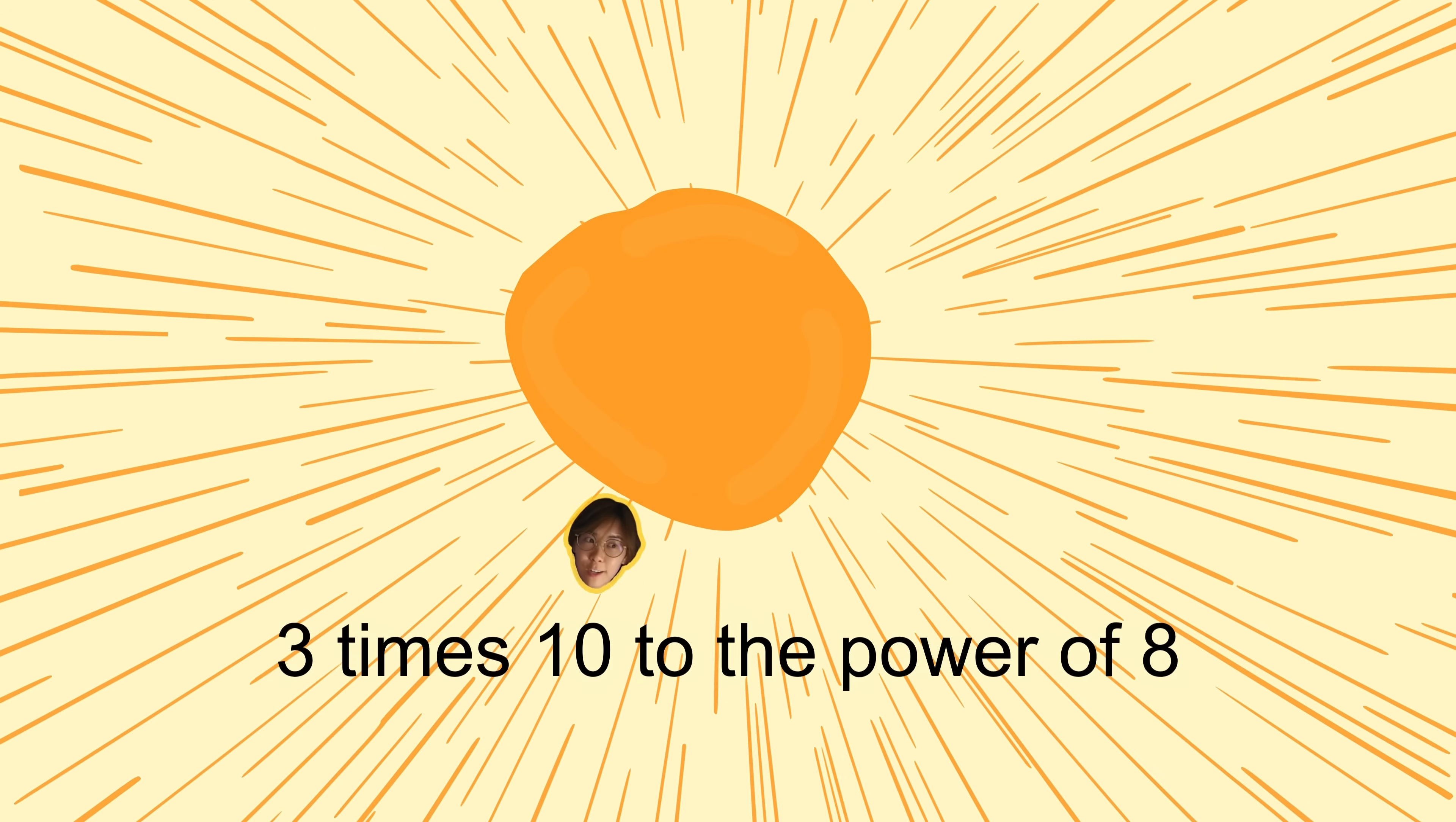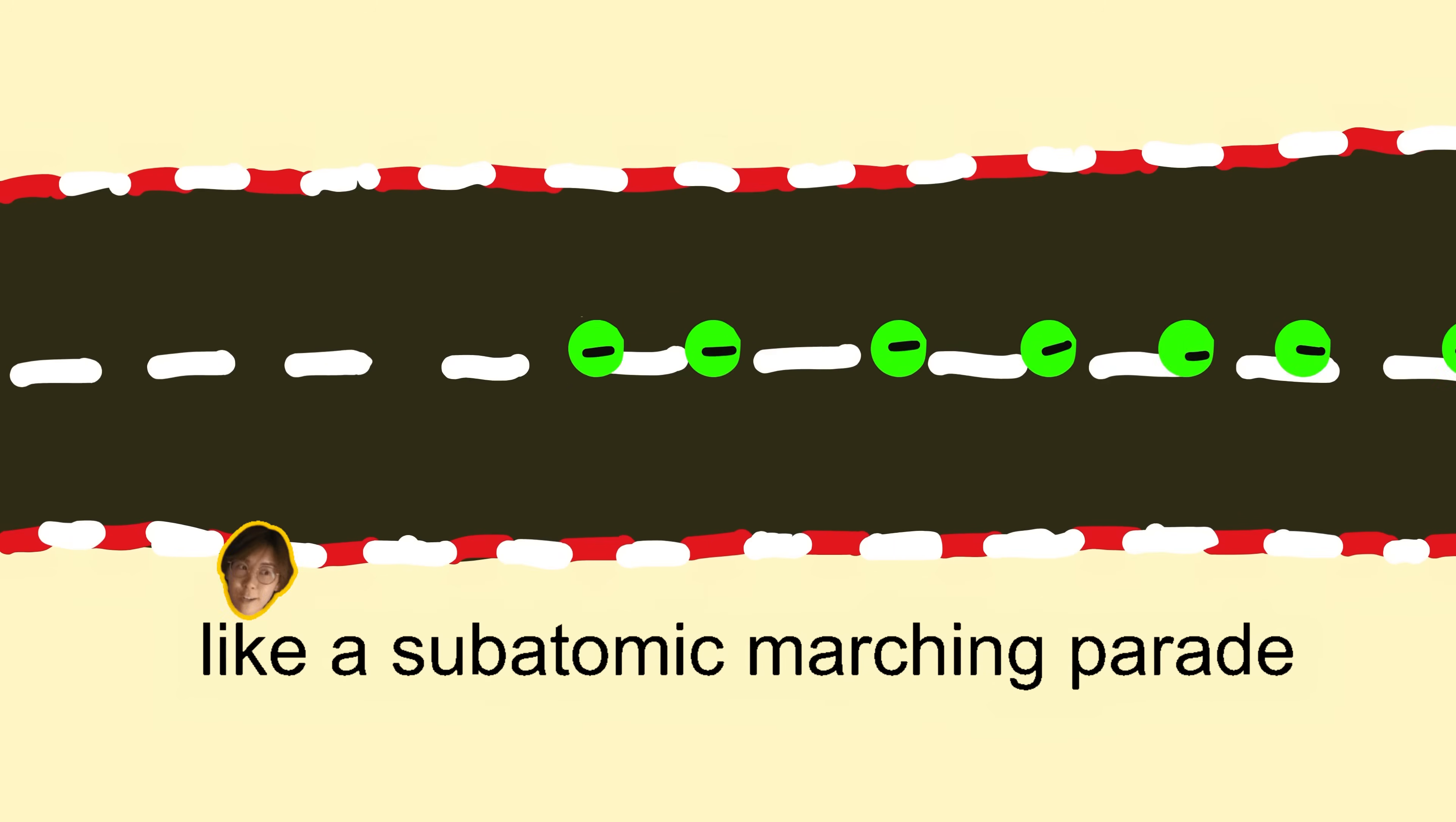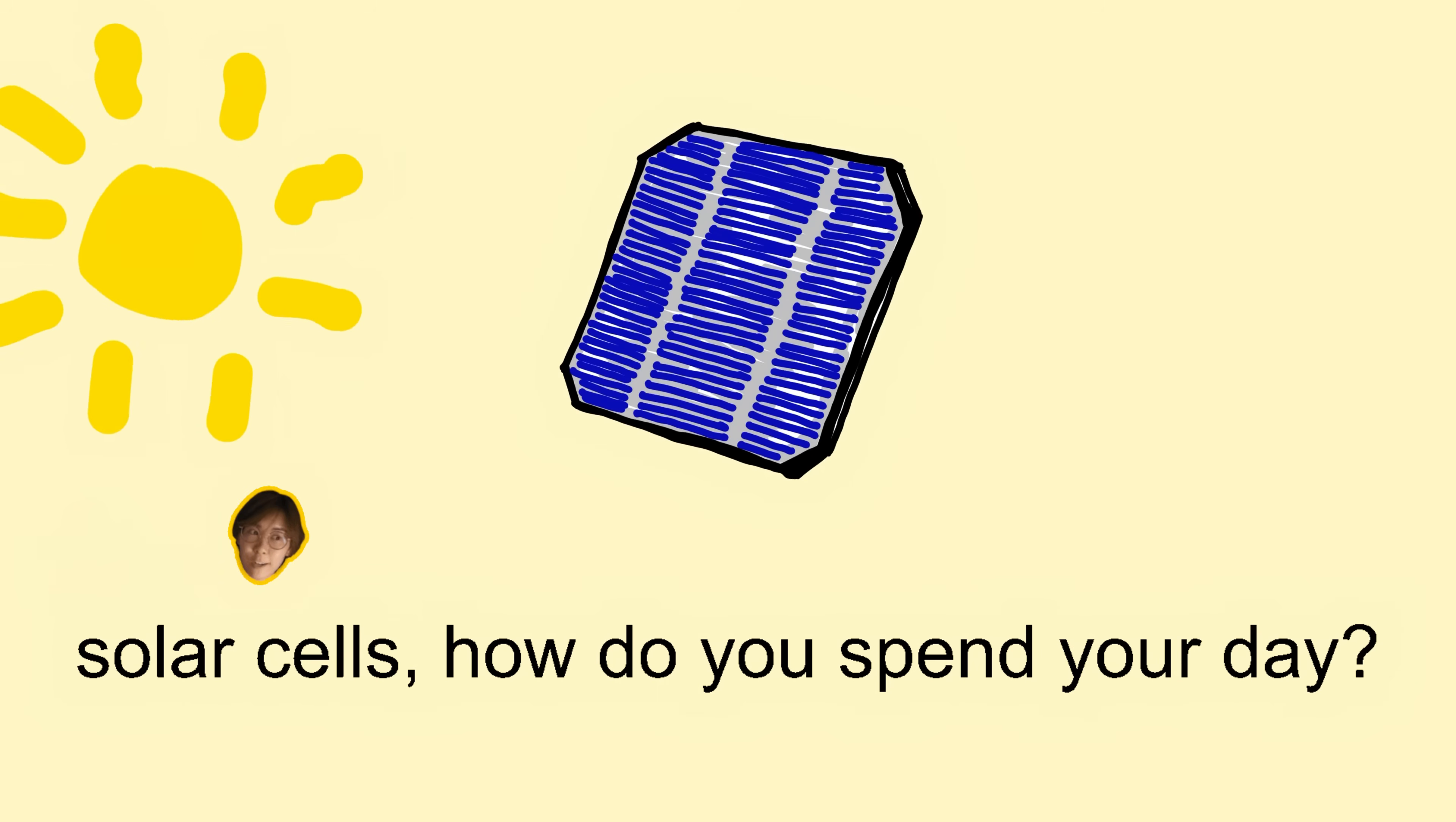Three times ten to the power of eight. When photons hit the panel, electrons start to race from AC to DC, electrons meet their fate on a one-way track like a subatomic marching parade. Oh, photons to power, it happens every day. Solar cells, how do you spend your day?